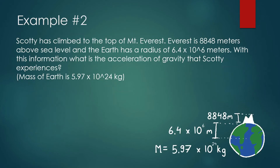Next example: Scotty has climbed to the top of Mount Everest. Everest is 8,848 meters above sea level, and the Earth has a radius of 6.4 × 10⁶ meters. With this information, what is the acceleration of gravity that Scotty experiences? The mass of the Earth is 5.97 × 10²⁴ kg. We're going to use the main formula: force of gravity equals G times mass of Scotty times mass of Earth divided by distance squared.